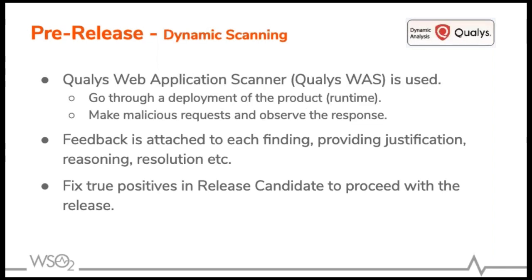Similarly, we use Qualys for dynamic scanning. Qualys web application scanner goes through a deployment of a product — basically the runtime. It will make malicious HTTP requests and observe what sort of responses are generated by the application. For the items reported by the Qualys web application scanner, product teams must attach feedback for each finding. Again, all true positives must be fixed in order to proceed with the release.